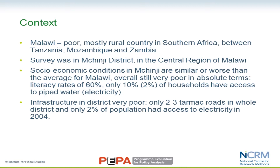I'll now spend the rest of the time on our experience in Malawi. Malawi is a mostly rural country in southern Africa, between Tanzania, Mozambique and Zambia. The survey was conducted in Mchenji district, in the central region of Malawi on the border with Zambia and Mozambique. This area is quite poor — its socio-economic conditions are similar to or worse than the average for Malawi. Literacy rates are about 60%, only 10% of households have access to piped water, and 2% to electricity.